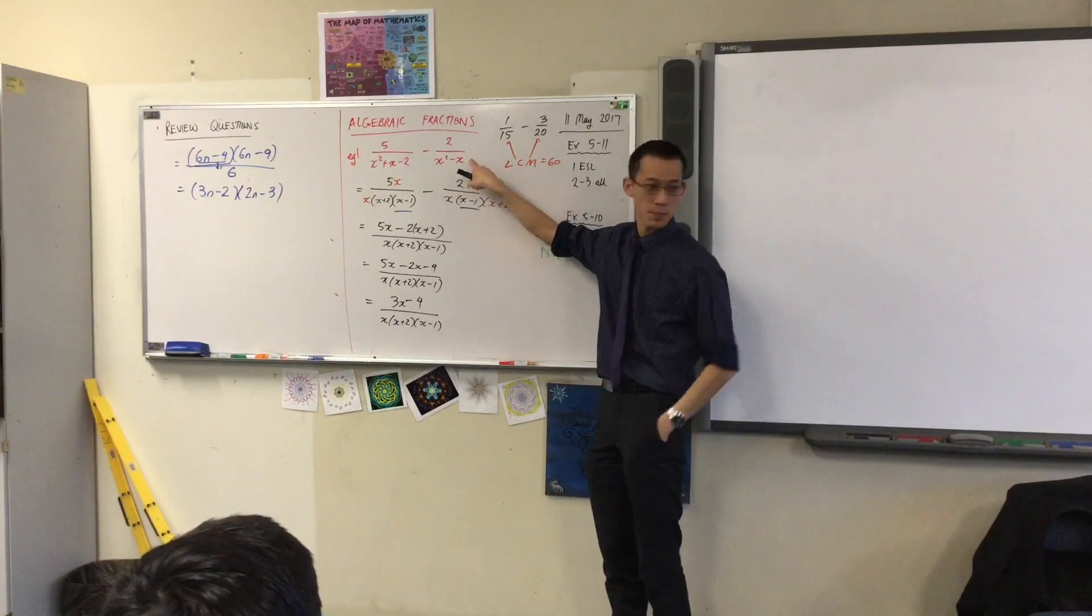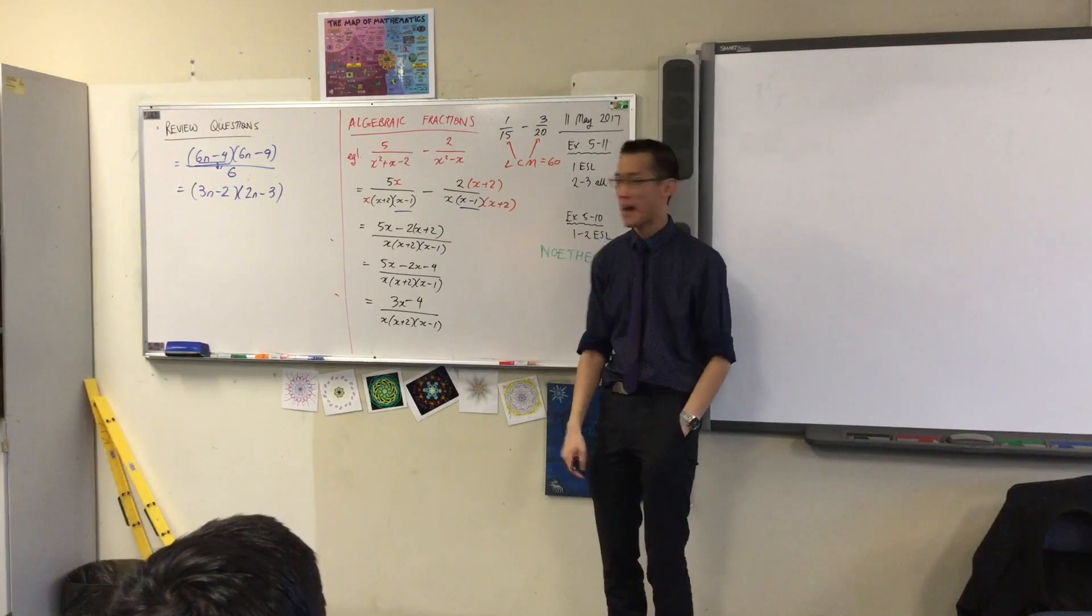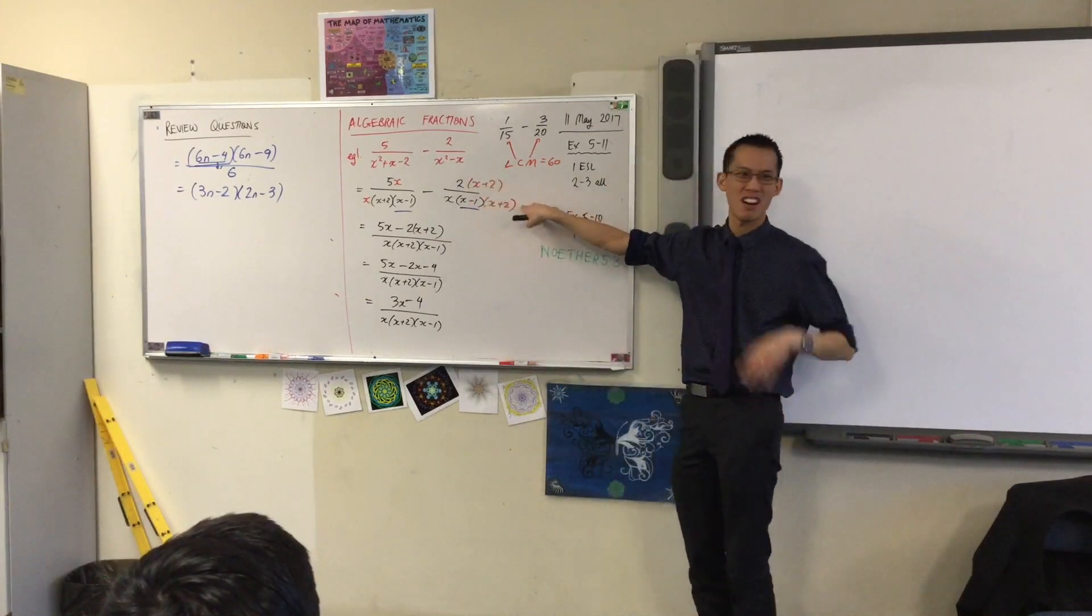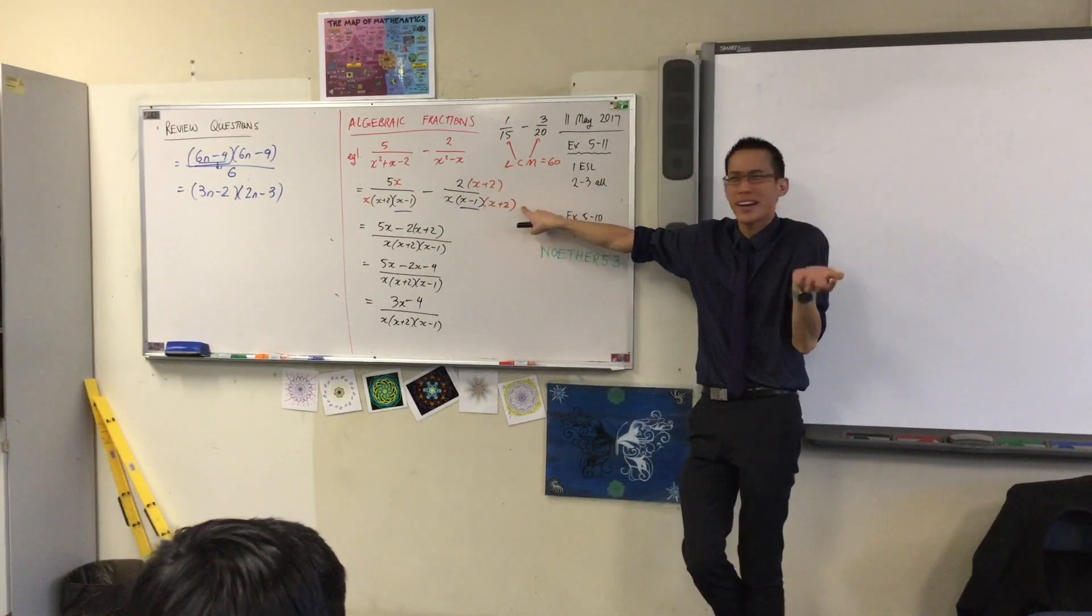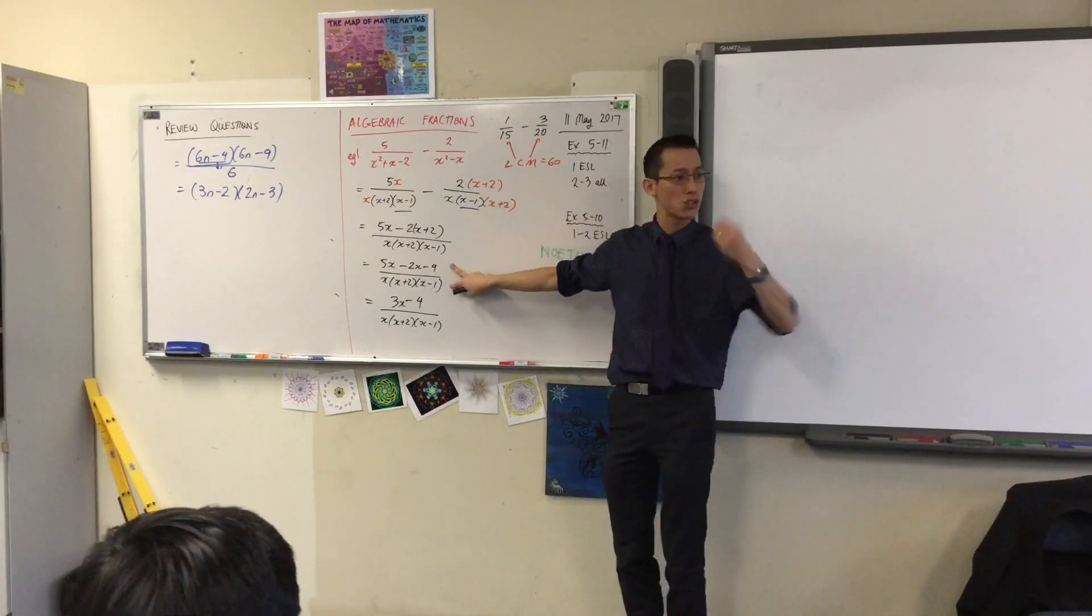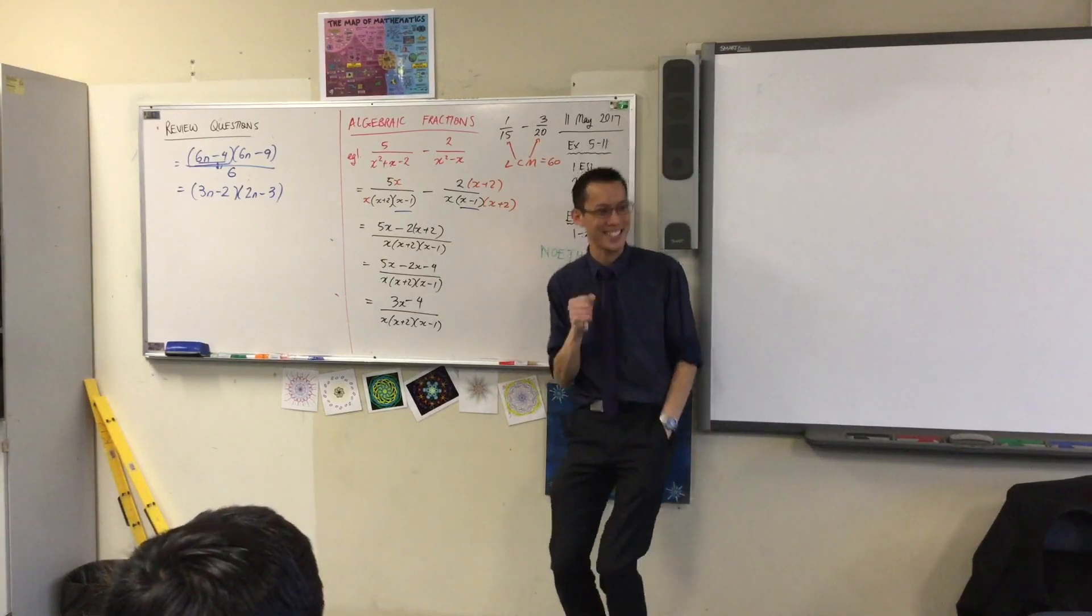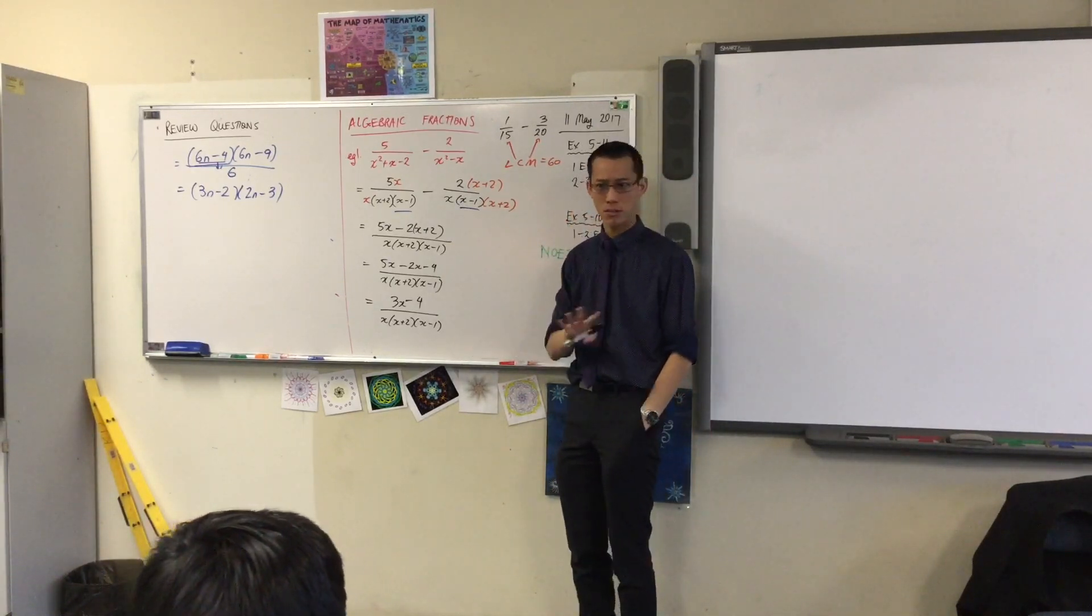expanding and factorizing in a question like this becomes something you choose to do not something you're told to do, right? No one said, oh, you have to factorize at this point. But to solve the question there's really no other way to go about it. You recognize, oh, without factorizing how am I going to work out the lowest common multiple? In the same way down here you choose to expand the top not because someone told you but because you can see I can make this simpler if I do. Does that make sense?